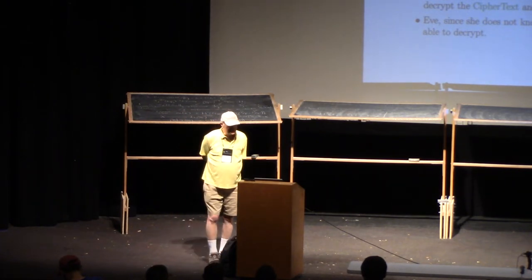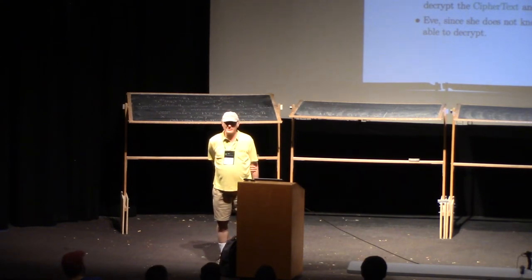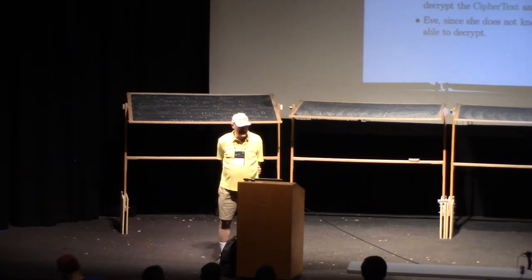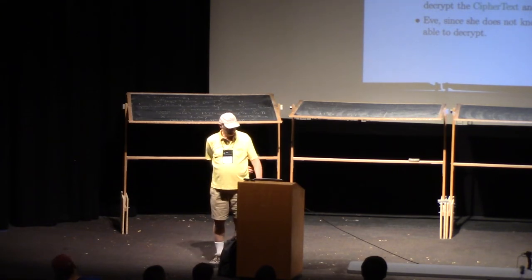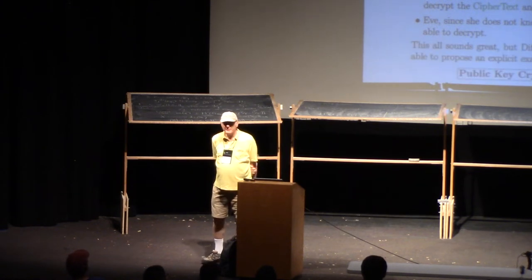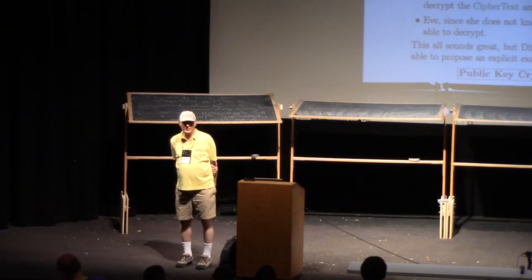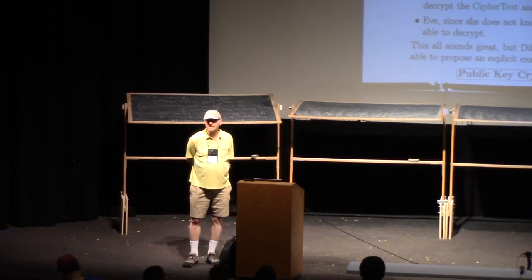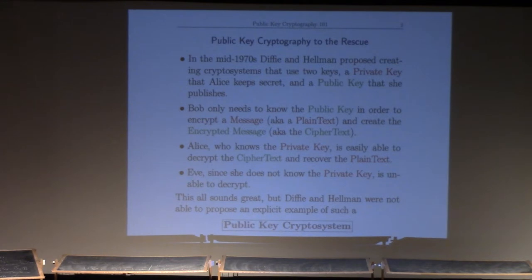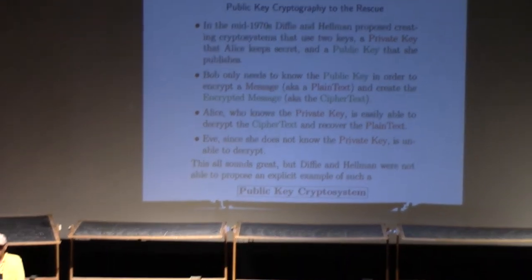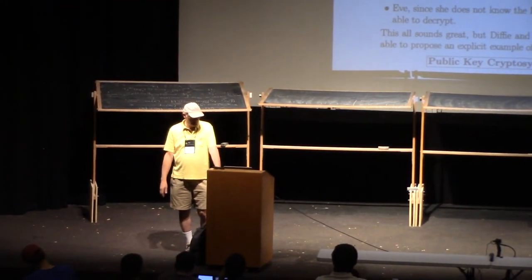The message that can be read is usually called the plaintext, and the encrypted message is called the ciphertext. Diffie and Hellman, in their groundbreaking paper, did not propose how to create such a system — they proposed something similar called a key exchange, but they did not come up with the full public key cryptosystem. These are now called public key crypto systems, or in fancier terminology, asymmetric crypto systems. I usually say 'public key,' which is a little bit of a misnomer because there are two keys — a public key and a private key.